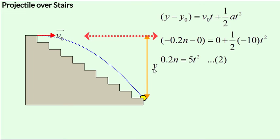The initial y-velocity would be 0 since the launch is horizontal. And the acceleration along the y-axis is minus g or minus 10. And now, we have our second equation, which is 0.2n equals 5t squared.